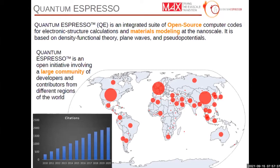Let me introduce the code briefly. Quantum ESPRESSO is not one single program or executable. It is instead a suite of codes interacting with modules and different programs. They are open source codes and the general scope is electronic structure calculations. It is used for calculating properties of molecules and materials. It is an open initiative involving a large community of developers spread around the world and also a large community of users. Here in the map, we tried to estimate the geographical distribution of users from scientific publications available in database journals.